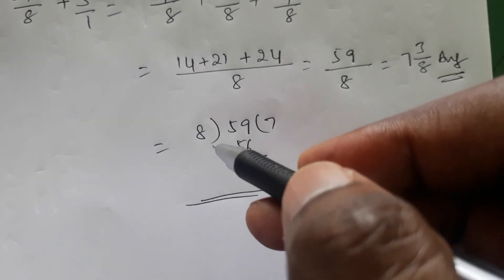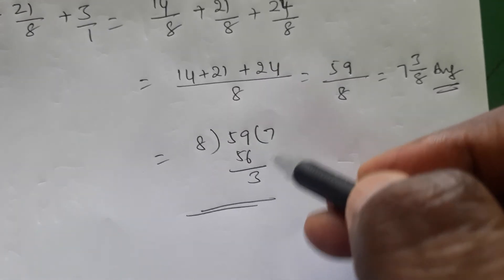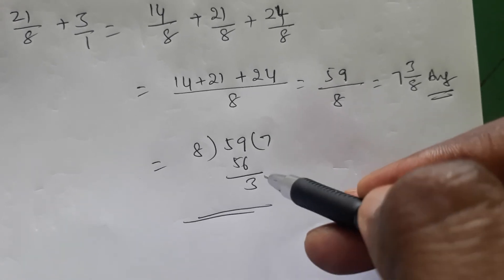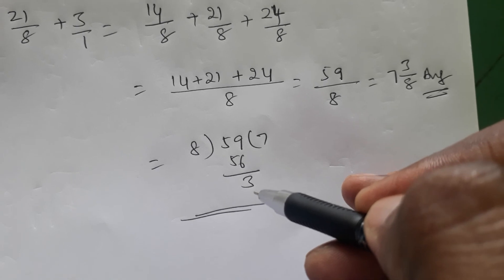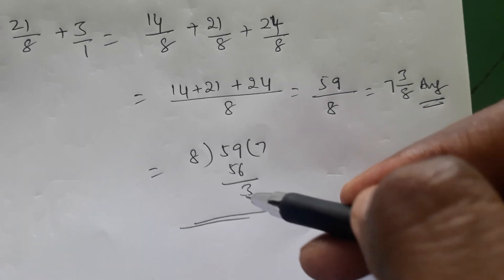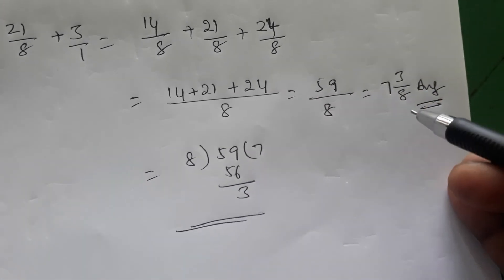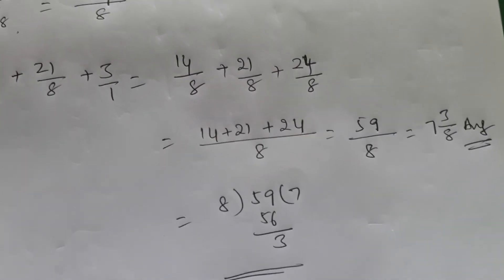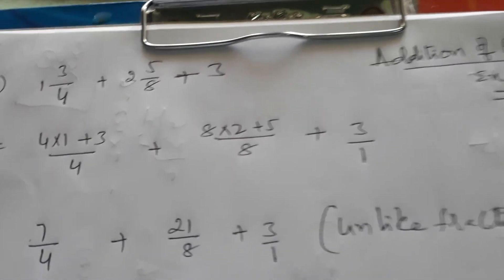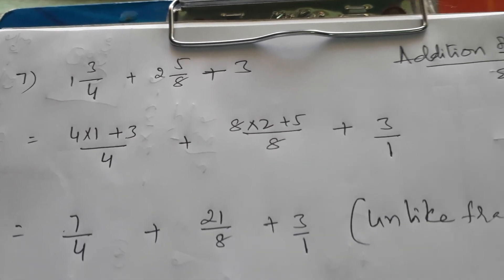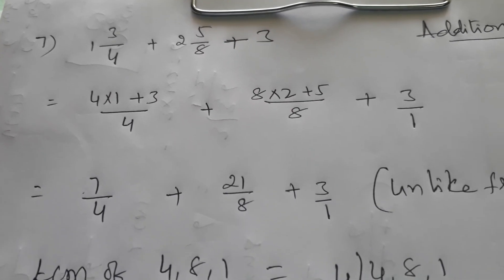So the final answer is 7 3/8 — that is quotient 7, remainder 3, divisor 8. Such a way we can convert mixed fractions and solve. The only new thing here is converting the mixed fraction to a normal fraction — everything else is the same as previous problems. That's all for now, thank you.